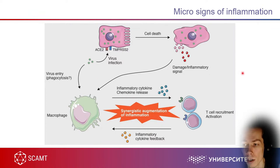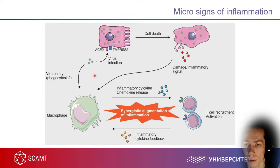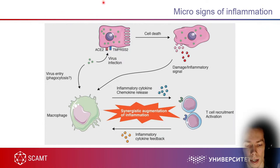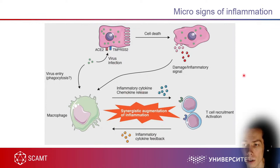This is called synergistic augmentation of inflammation — a self-regulated system. Instead of a virus infection, the trigger can be nanoparticles, physical damage, bacterial damage, or cells dying from heat or cold — all can cause an inflammatory response.